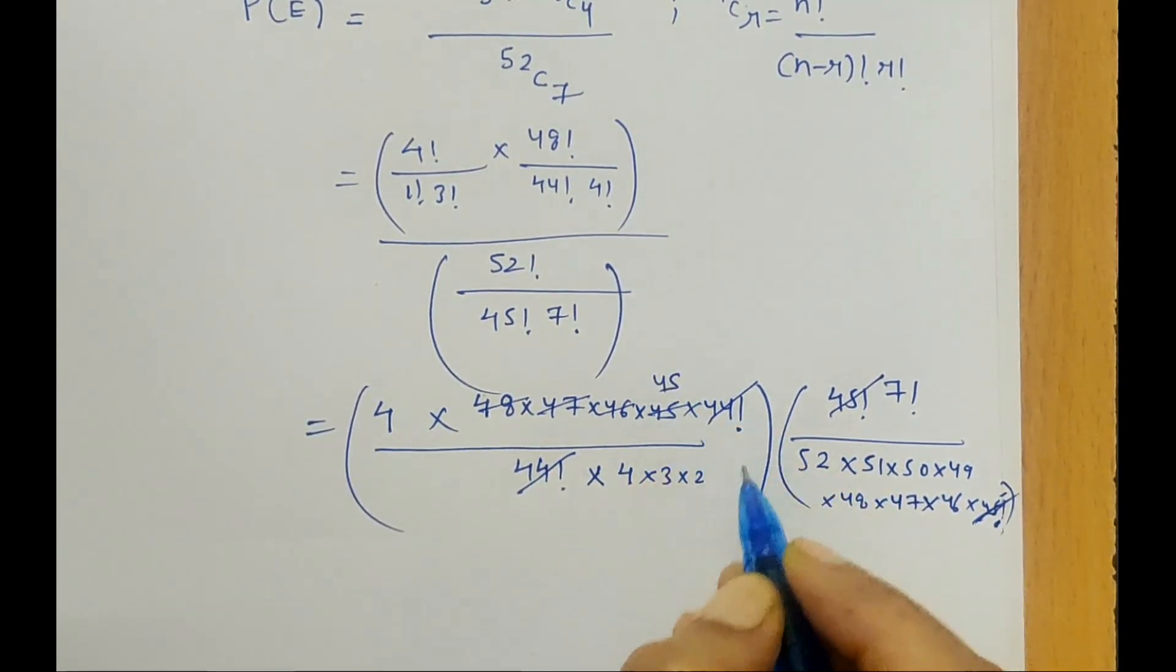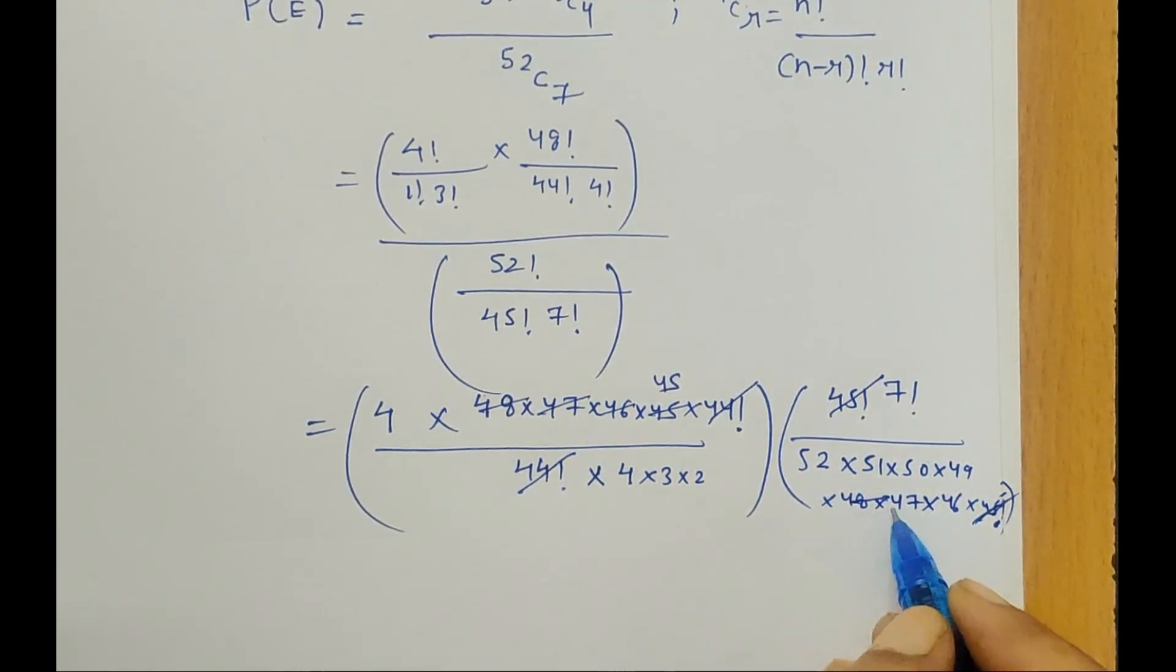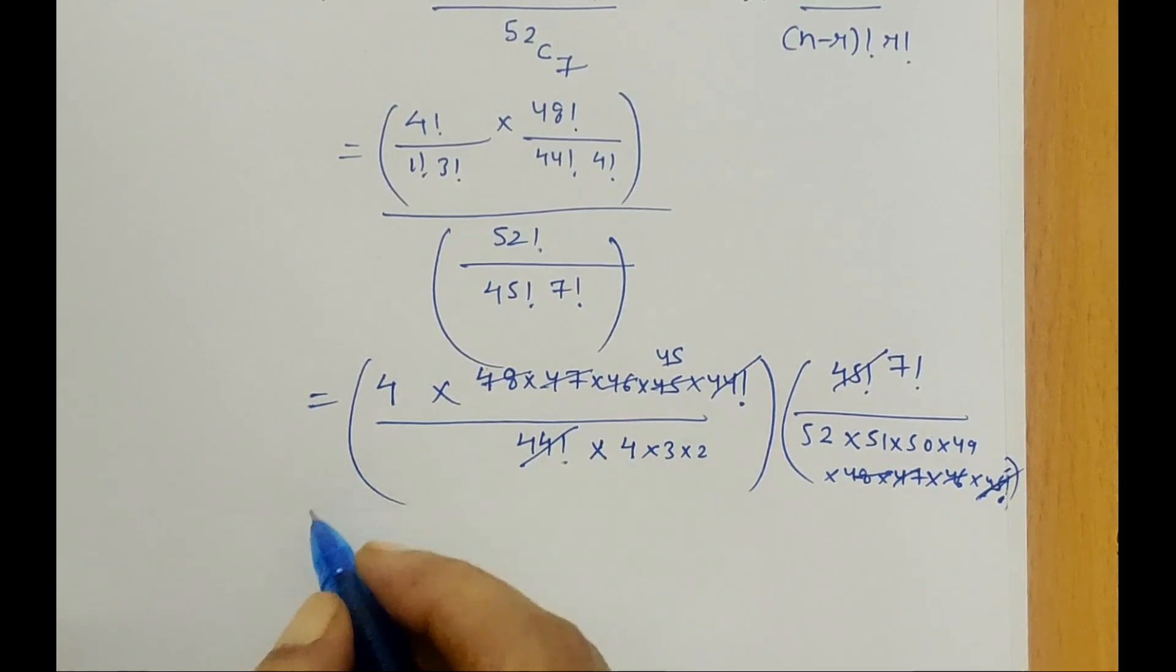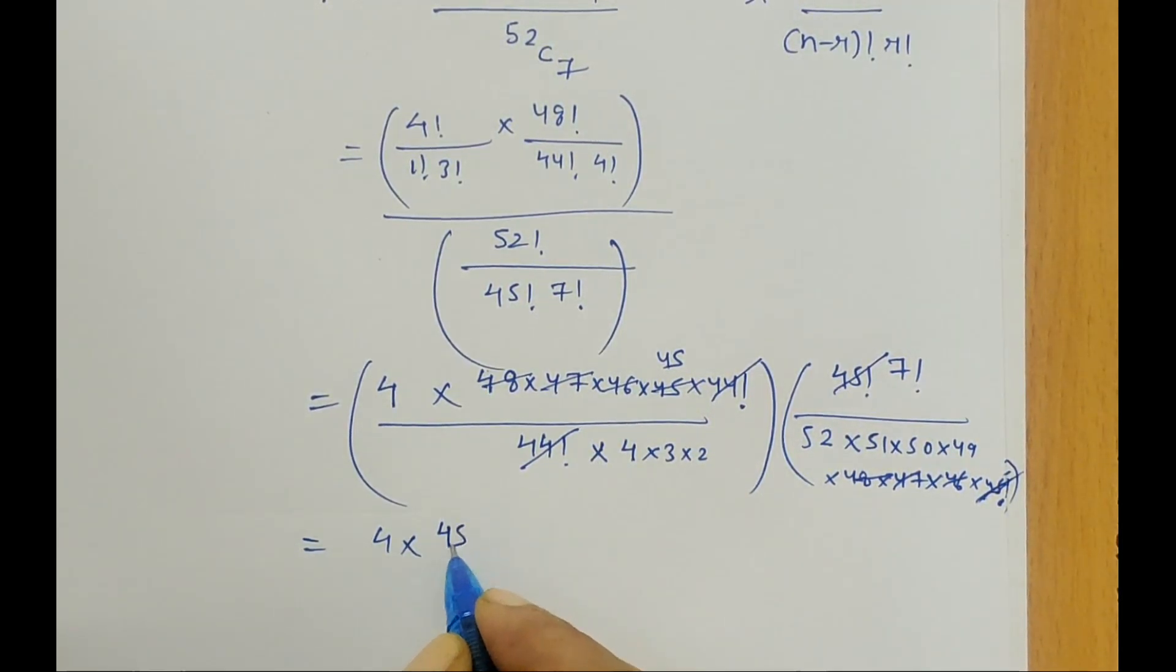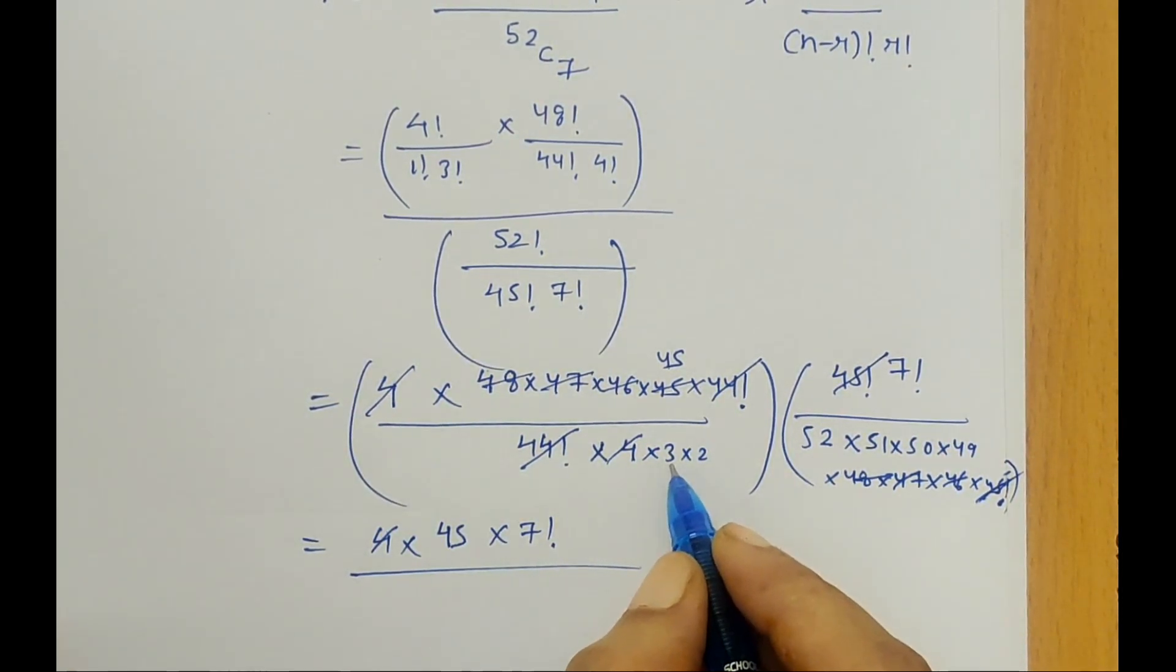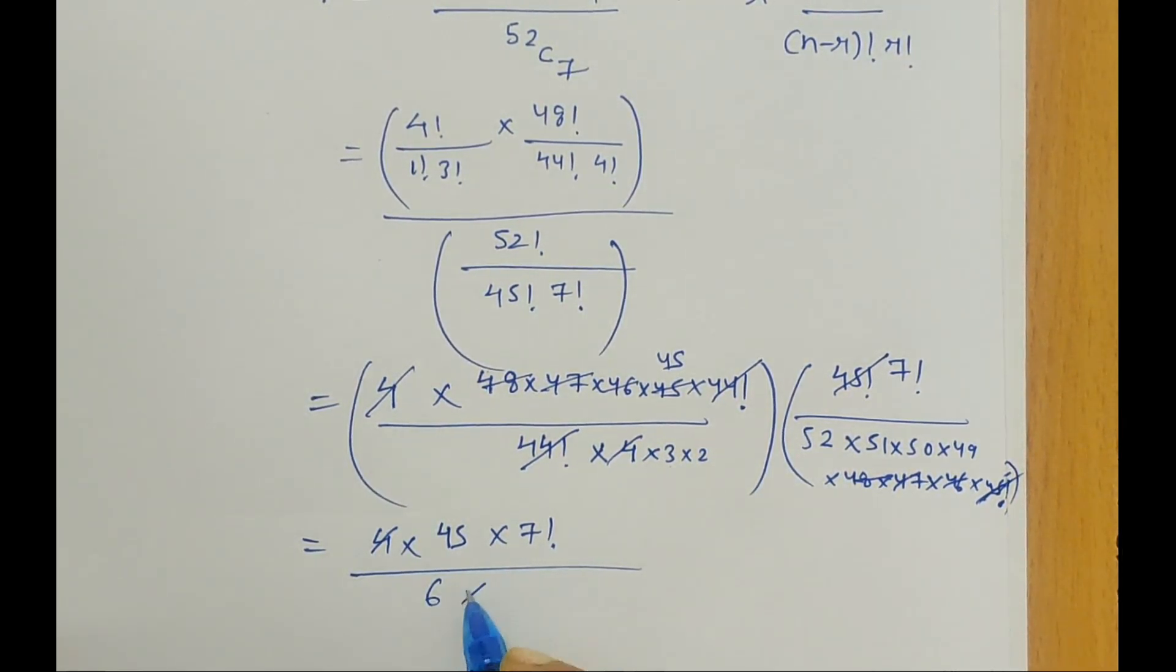48, 47, 46 gets cancelled with these numerators, and we are left with 4 times 45 and the 7 factorial upon 52 times 51 times 50 times 49. Again, this 4 and 4 gets cancelled, so 3 times 2 is 12. We are left with these terms.